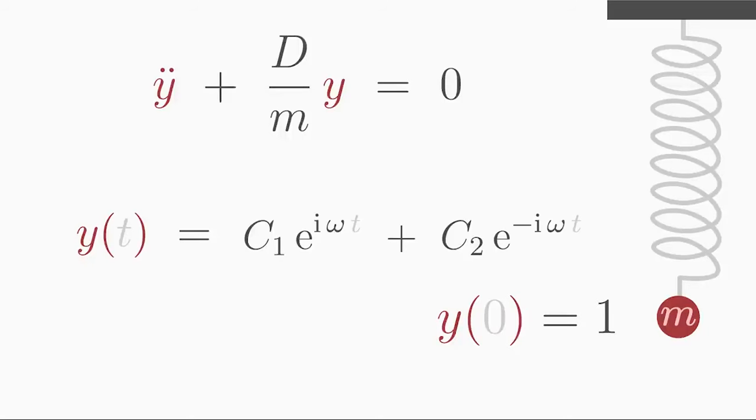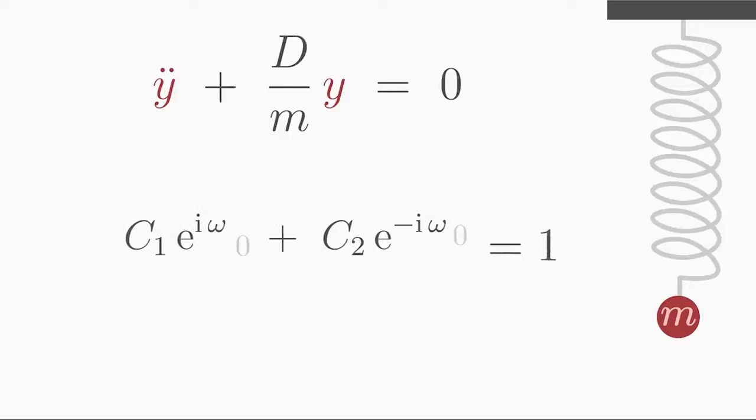Insert this condition into the solution to determine c1. e to the power of 0 is 1. Rearrange for c1 and you get c1 is equal to 1 minus c2.